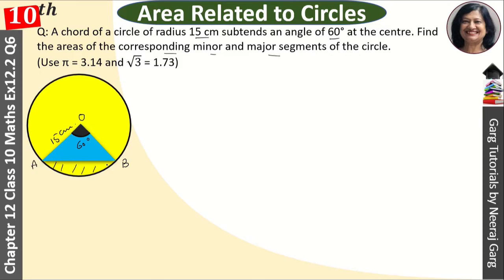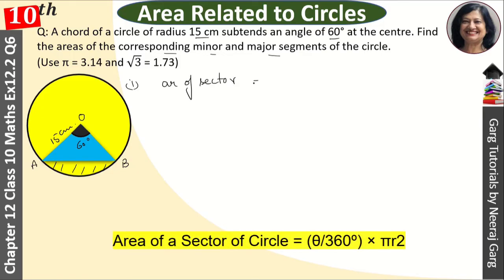First of all, we will remove this area. We will remove area of sector. Area of sector is theta upon 360 into pi r square. You should remember the formula.